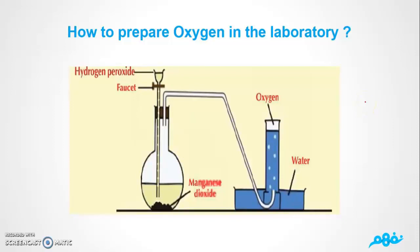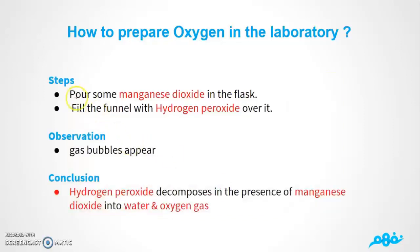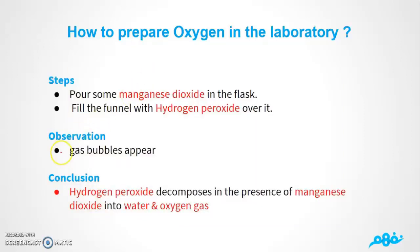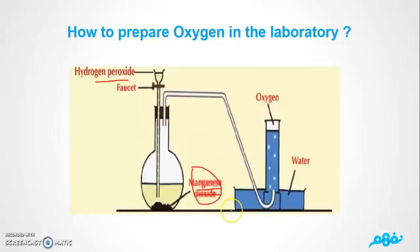As you can see, we have hydrogen peroxide, and we're going to add magnesium dioxide. The steps are: we're going to pour some magnesium dioxide into the flask, and then we're going to pour hydrogen peroxide over it.